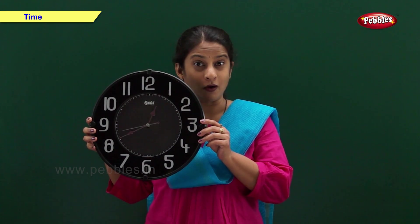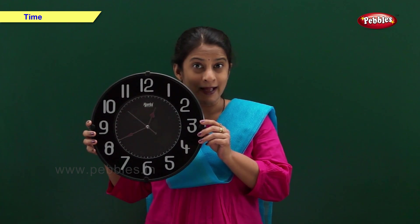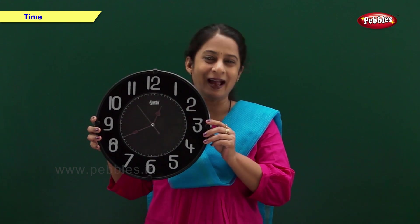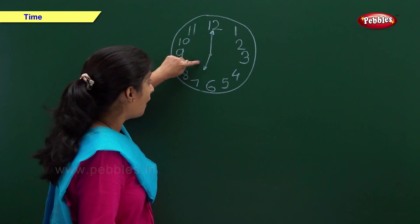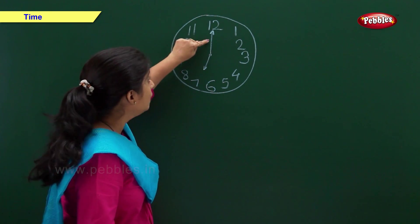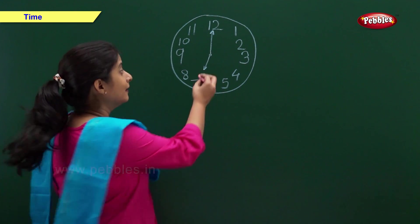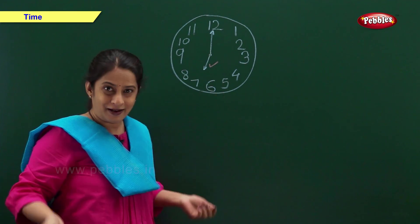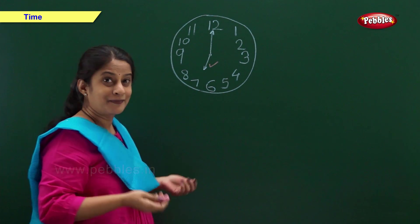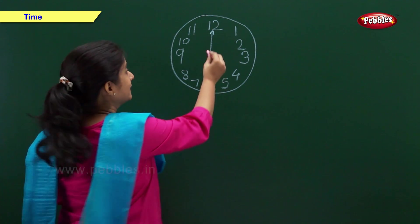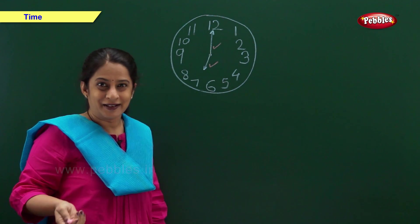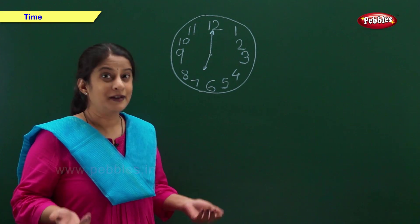This is a clock. The face of the clock is called the dial. The dial has numbers from 1 to 12. The clock has two or three hands — a short hand and a long hand. The short hand is called the hour hand. The long hand is called the minute hand. The clock tells us the time.